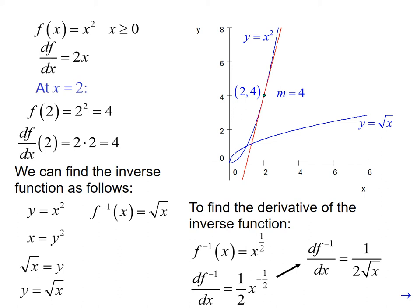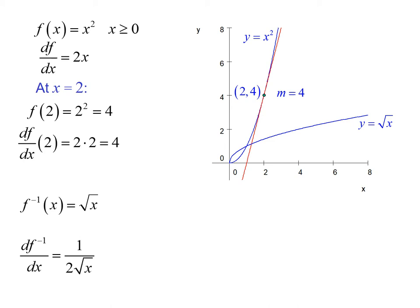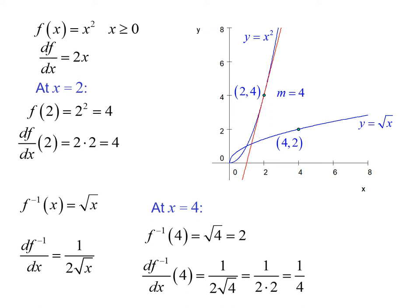Now recall that if we have an inverse function, if a point x, y exists on the function f, then those x and y coordinates are switched for the function f inverse of x. So when x equals 4, our y value is 2, and the derivative at 4 is 1 fourth.